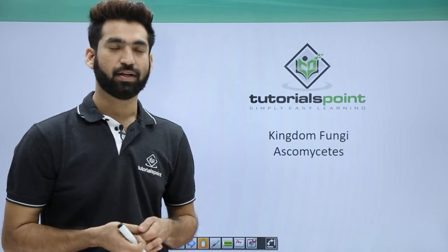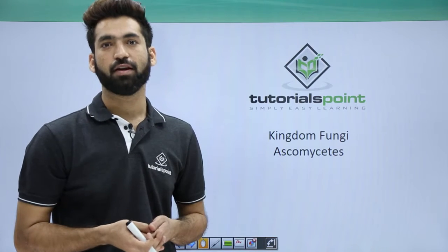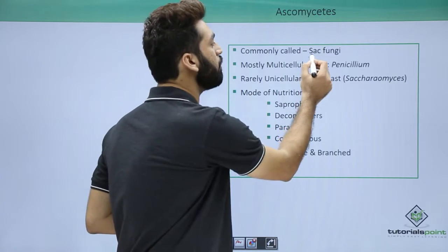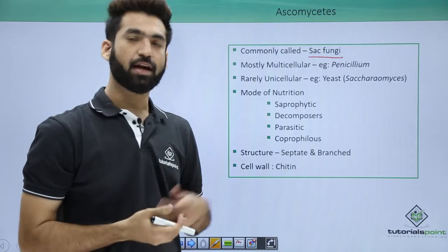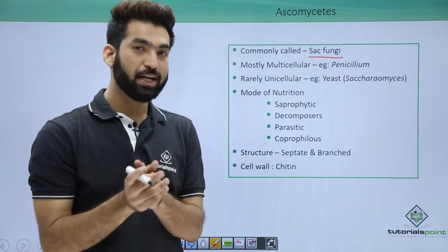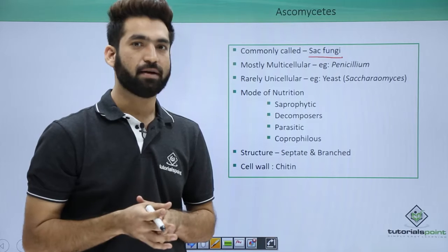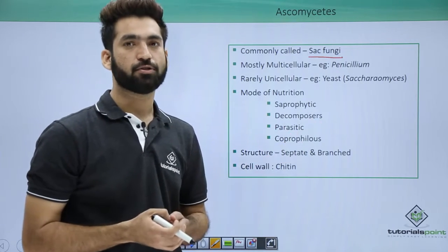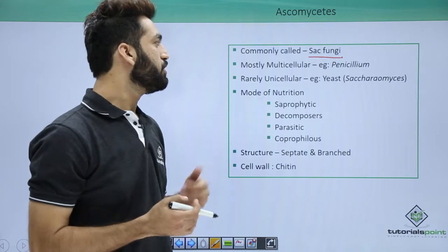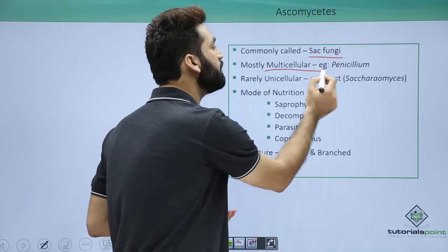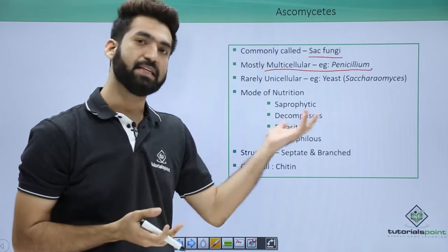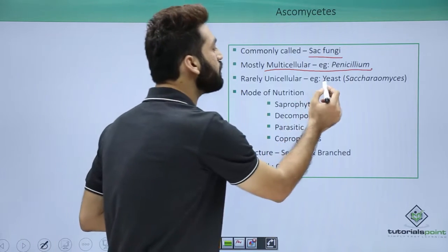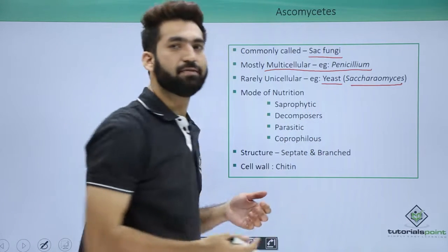In this session we'll be starting with one important class of fungi called Ascomycetes. Ascomycetes are also called sac fungi; they are also called diverse fungi. Most fungi are multicellular, but yeast is a unicellular fungus that also belongs to this class. Most fungi like Penicillium are multicellular. Penicillium is a particular member of Ascomycetes which produces penicillin.